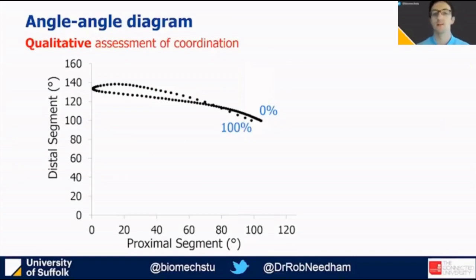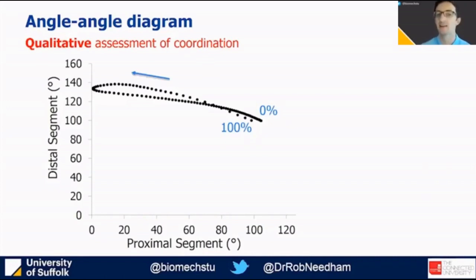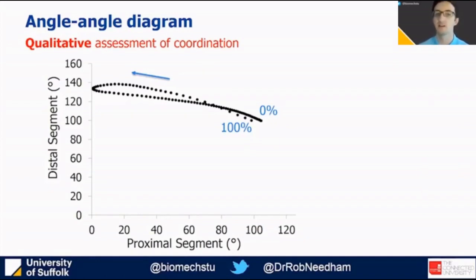We can qualitatively assess coordination using an angle-angle plot. For this example we have time-normalized thigh-shank data, and a small increase in distal segment angle with a greater decrease in proximal segment angle would refer to an antiphase proximal dominancy.